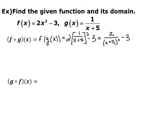So f composed with g of x is 2 over (x plus 5) quantity squared minus 3. Now we want to find the domain. First we find the domain of the inside function, so the domain of g. g is a rational function — you can't have zeros in the denominator, so our domain is that x cannot equal negative 5. Then we look at our final function and find its domain. Again, it's a rational function, and its restriction is also x cannot equal negative 5.